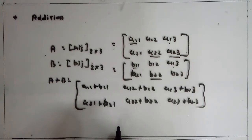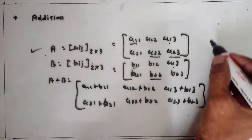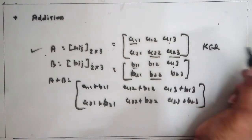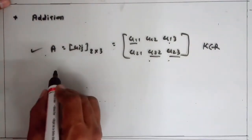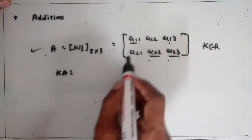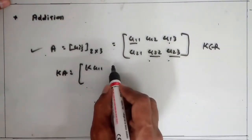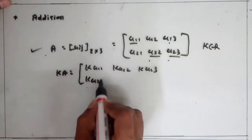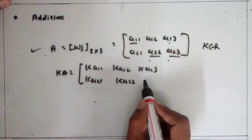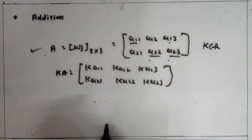Next, multiplication of a matrix by a scalar. If we have matrix A equals Aij of order 2×3, and a scalar k where k belongs to R — k is any real number — then matrix multiplication with a scalar is k into A equals: we multiply each entry of this matrix by k, giving k·a11, k·a12, k·a13, k·a21, k·a22, and k·a23. So this is scalar multiplication of a matrix.